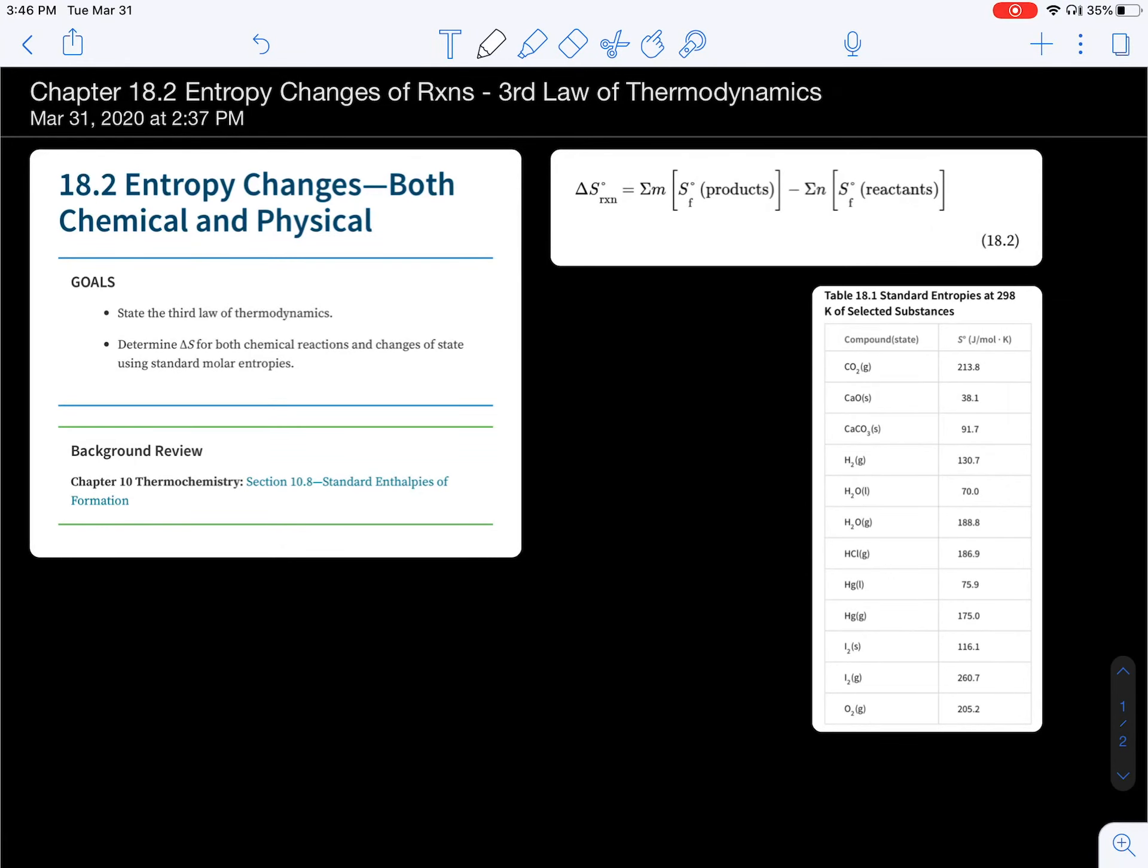Welcome back to General Chemistry 2, to the next section in Chapter 18. It should be a pretty short section. Last time we talked about the second law of thermodynamics and the fact that to get a spontaneous reaction, one that occurs at specific conditions, you have to have an overall positive increase in the randomness or entropy of the universe.